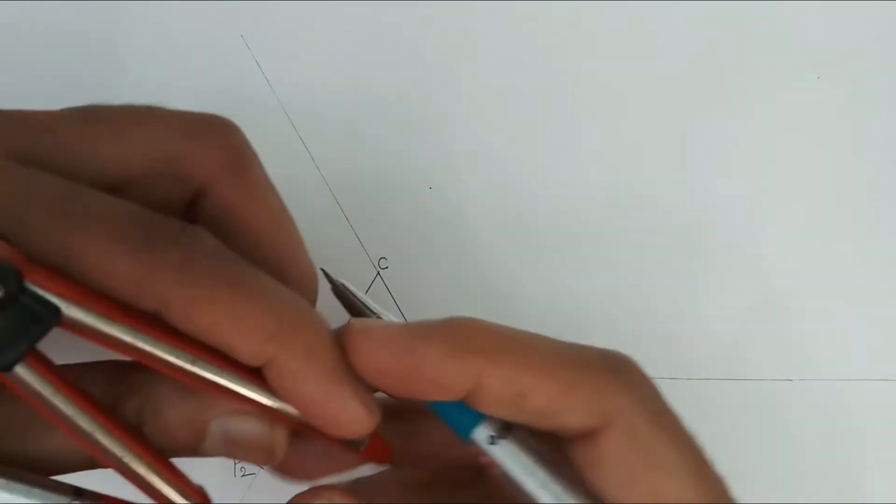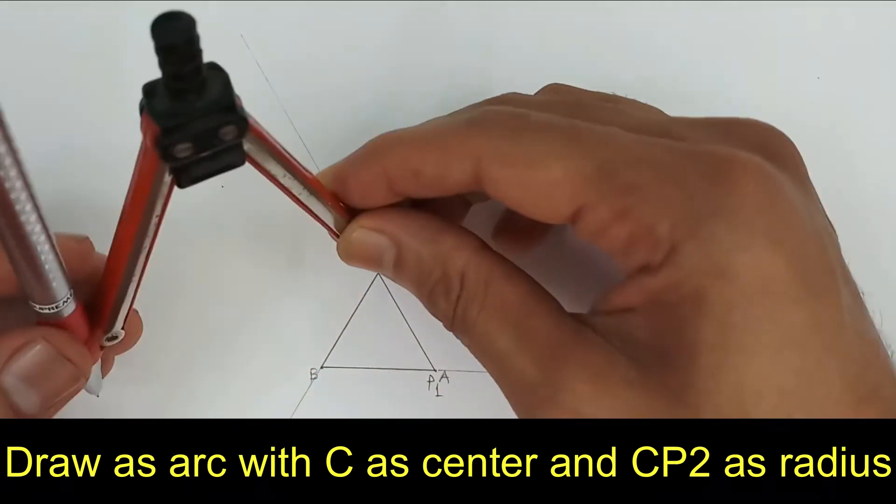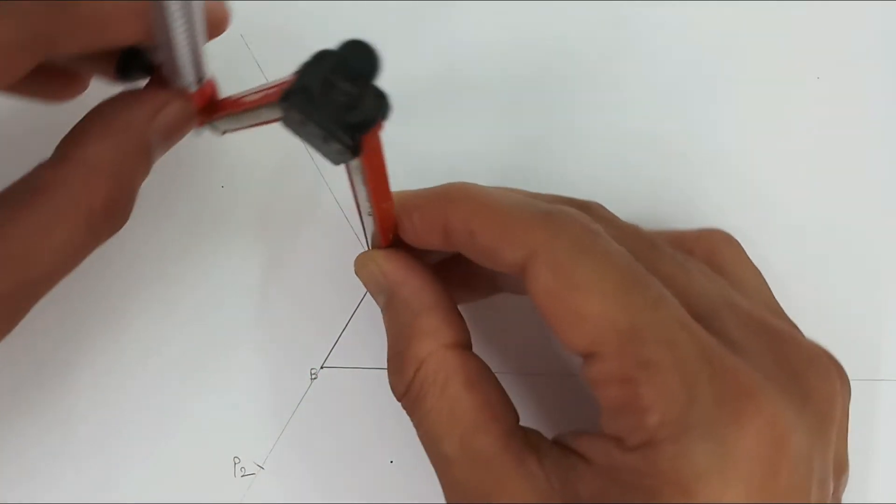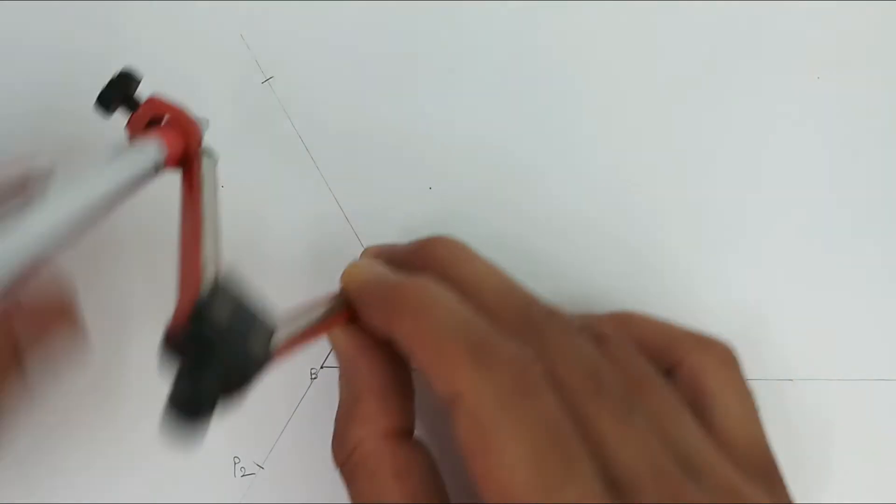As I further unwind it, then it will rotate with C as center and CP2 as radius. So this is the second point of the curve, rather third point of the curve.